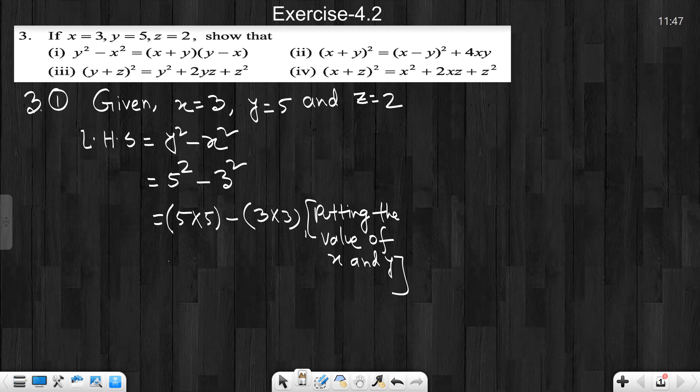Let's write this. 5 multiply 5, what is it? 5 times 5 is 25. Minus 3 multiply 3, what is it? 3 times 3 is 9. 25 minus 9 is 16. This is left-hand side.